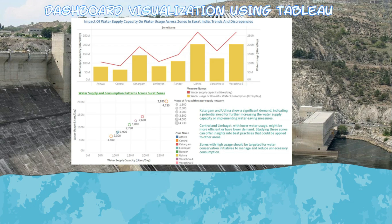Here's a scatter plot showing water supply and consumption patterns across Surat zones. You can see all the zone names and the percentage of areas with water supply networks. The x-axis has water supply capacity and the y-axis has water usage. This is actually my first dashboard visualization I wanted to share.